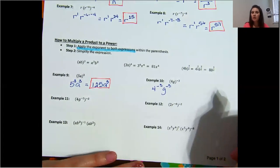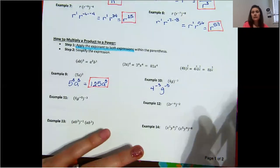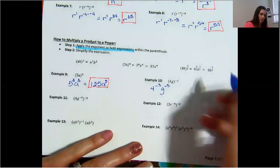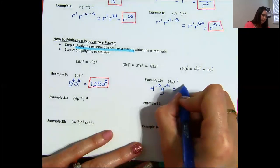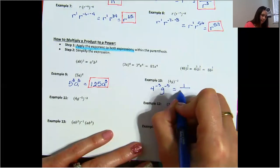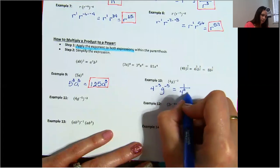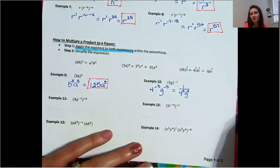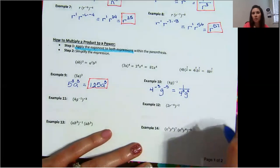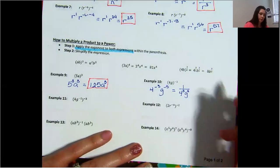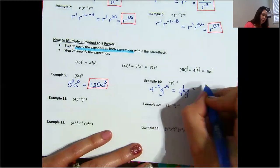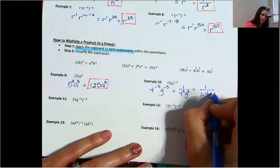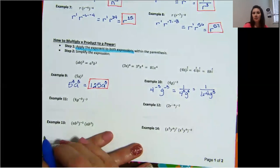We can't do anything else until we move it to the bottom, because we have negative exponents. So we will rewrite this as 1 over 4 cubed times G to the power of 3. Four to the power of 3 is 64, so the answer is 1 over 64 G cubed.